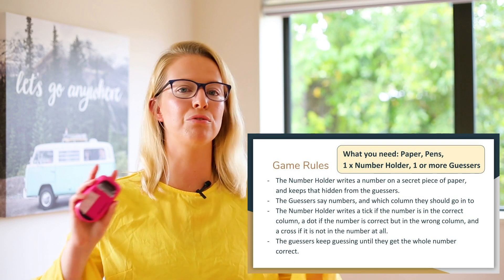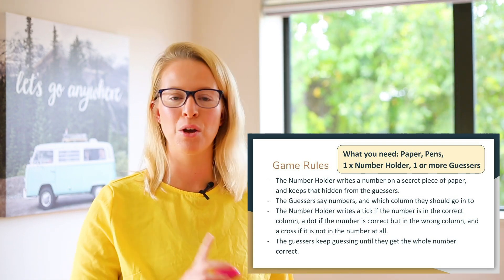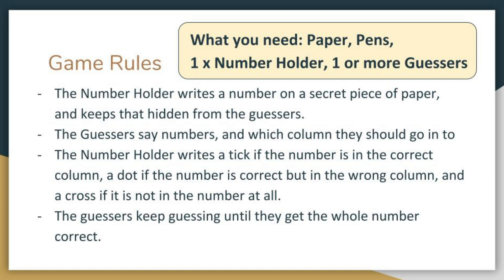Let's have a look at the rules for the game we are about to play. What you'll need is paper, pens, one person to be the number holder, and one or more people to be the guessers. The number holder writes a number on a secret piece of paper and keeps it hidden from the guessers. The guessers say numbers and which column they think they should go into. The number holder writes a tick if the number is correct, a dot if the number is correct but in the wrong column, and a cross if it is not in the number at all. The guessers keep guessing until they get the whole number correct.